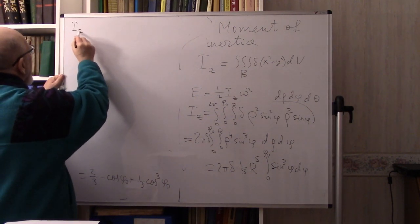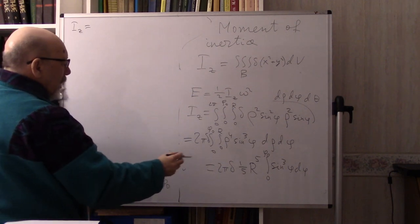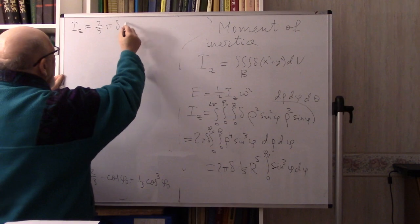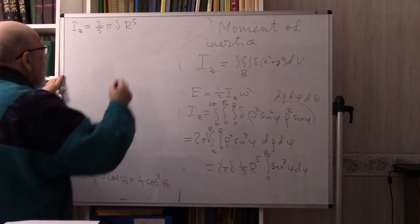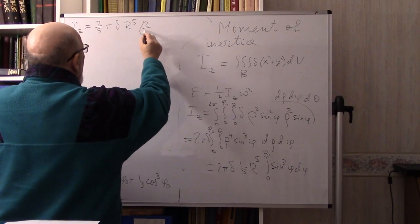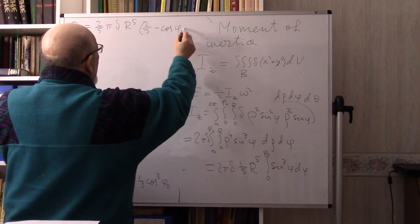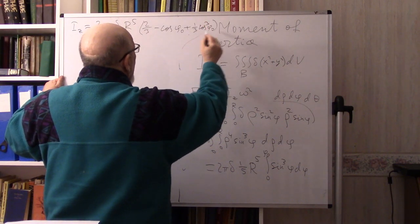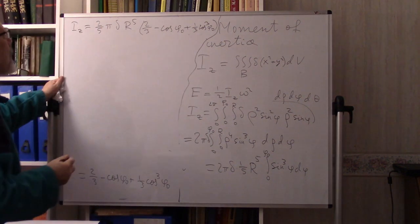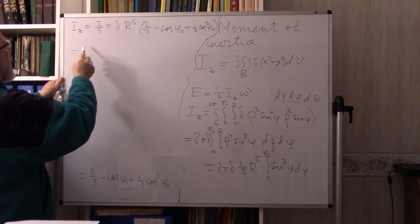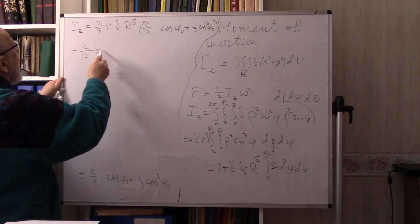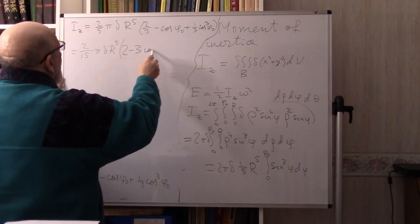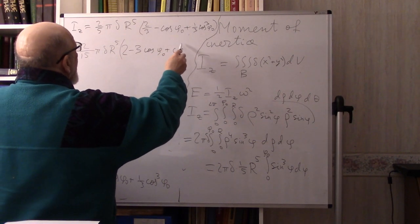So I_z = (2/5)πδR⁵ times (2/3 − cos φ₀ + (1/3)cos³φ₀), which simplifies to I_z = (2/15)πδR⁵ · (2 − 3cosφ₀ + cos³φ₀). For the special case φ₀ = π (the whole ball), cos π = −1, so we get 2 + 3 + (−1) = ... that gives I_z = (8/15)πδR⁵.